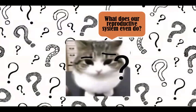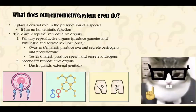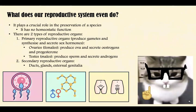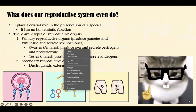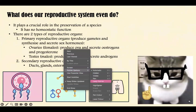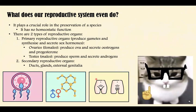The first question that comes to mind is: what does our reproductive system even do? It has a few functions. However, we need to note that it doesn't really have any homeostatic function — meaning anything that regulates the body's homeostasis, like the cardiovascular system, GI system, or endocrine system. The reproductive system mainly works in producing gametes and regulating other reproductive functions.